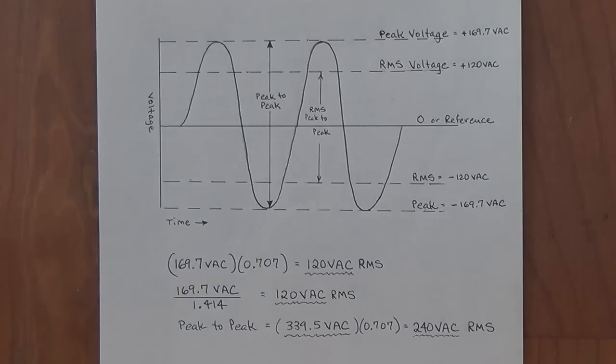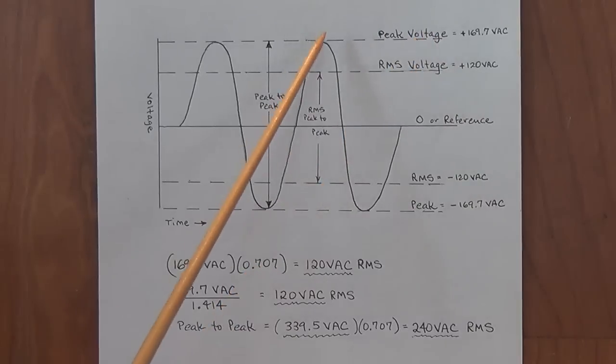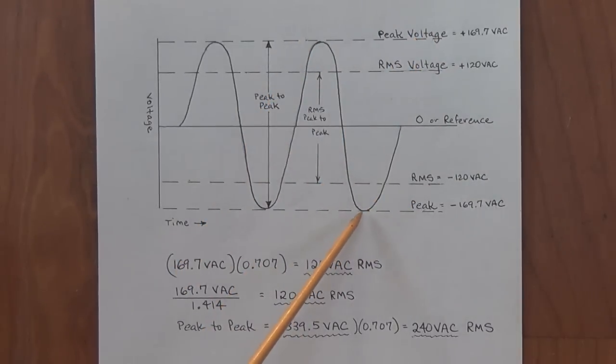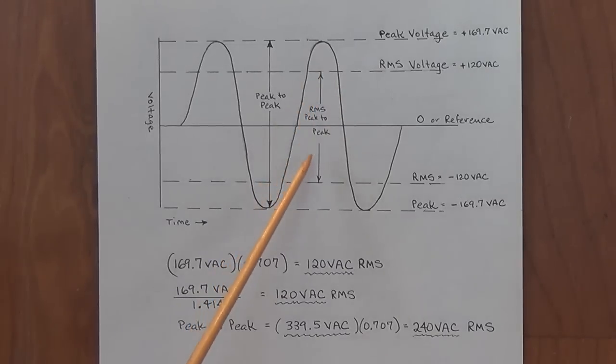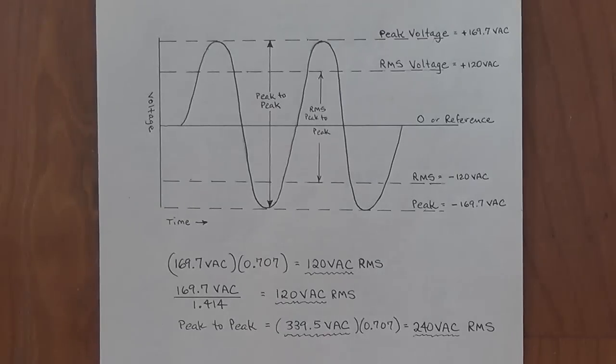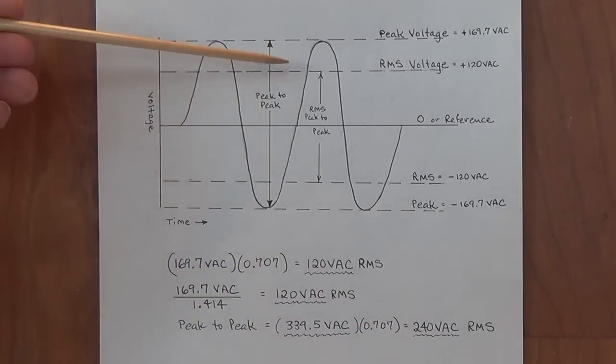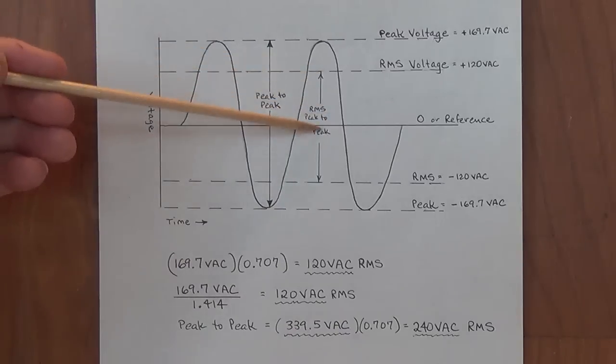Now let's apply this knowledge to the bottom of those three graphs that I showed you initially. Here it is, the peak voltage positive is 169.7 volts AC, peak voltage negative is minus 169.7 volts AC. If we multiply the 169.7 value times 0.707, we end up with 120 volts AC RMS, which is designated here by the dotted lines. And we can also divide the 169.7 by 1.414. Either way, we get the same RMS values. And the peak-to-peak, which was 339.5 volts AC times 0.707 means that we now have a 240 volt peak-to-peak voltage at RMS, plus 120 and minus 120.